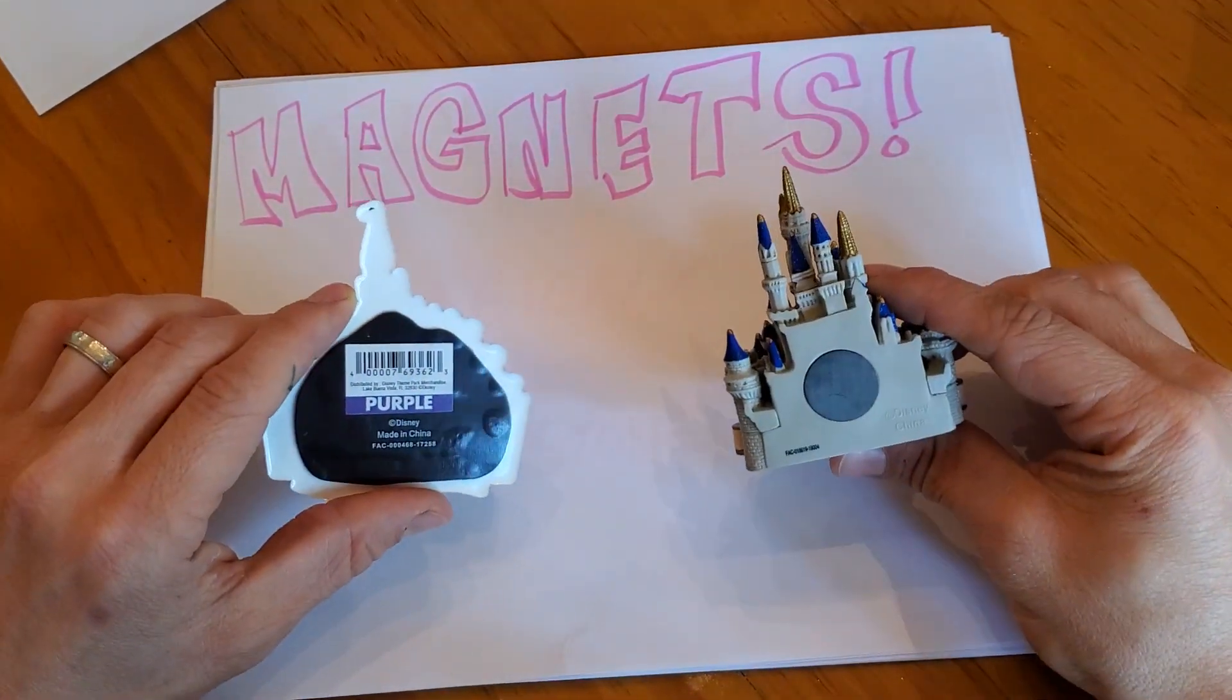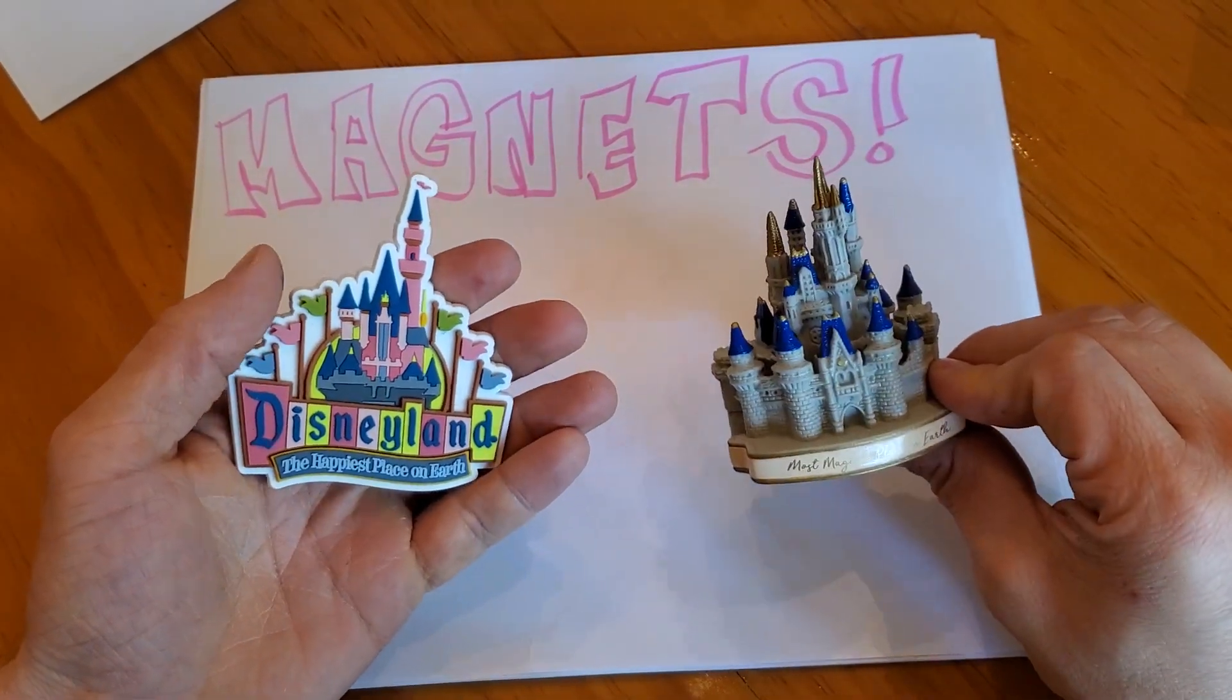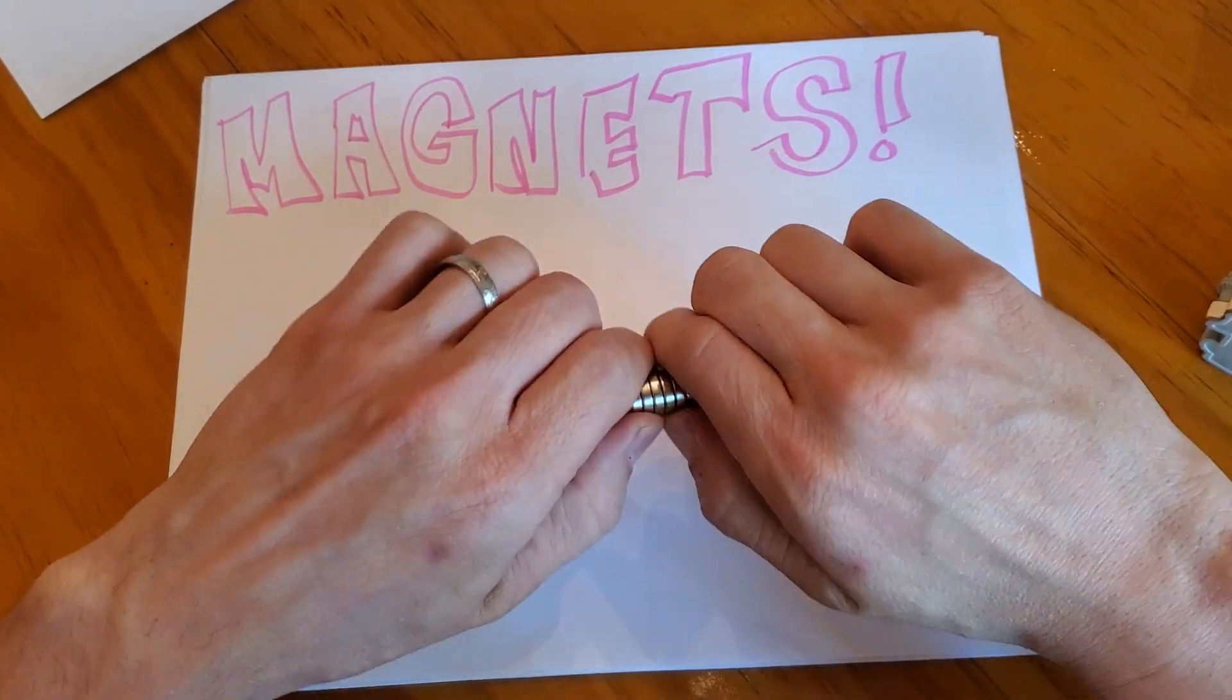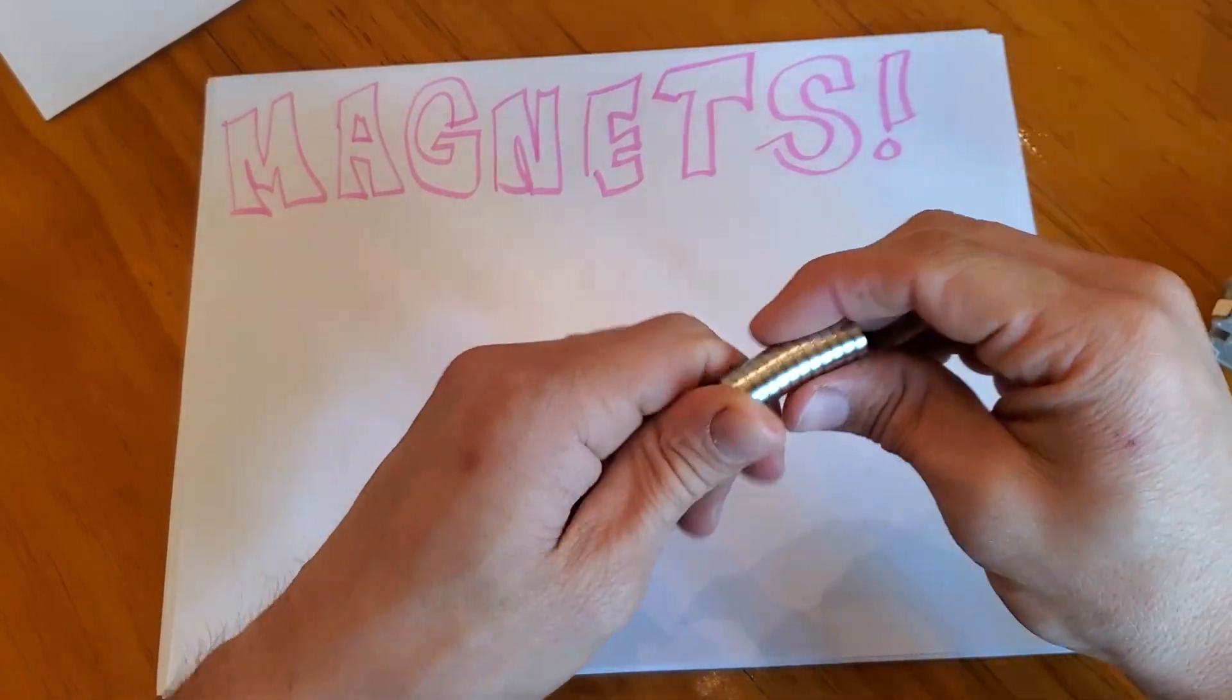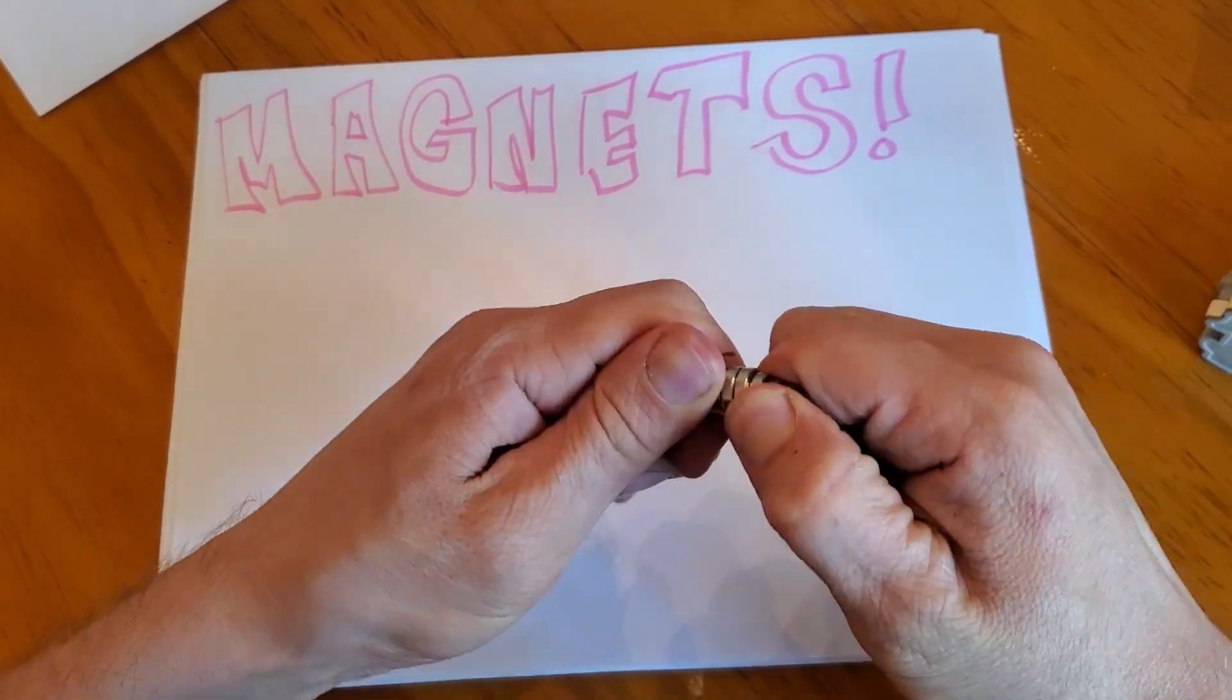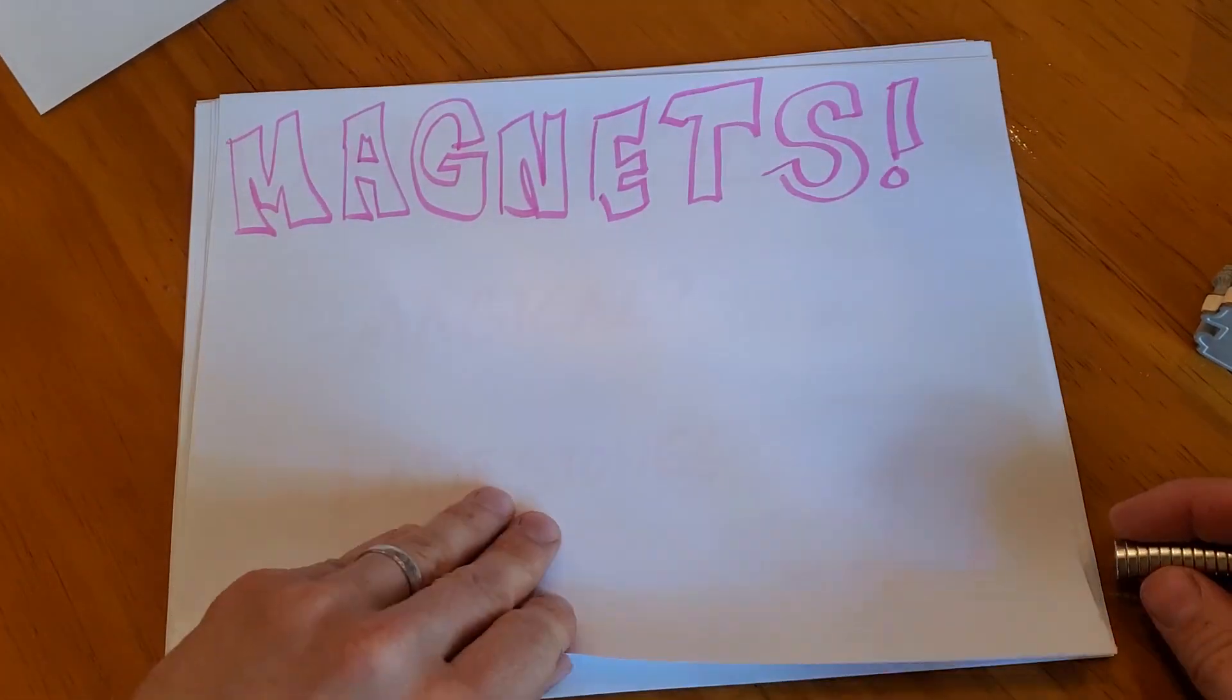First I have some quick examples of magnets. You can tell my wife is a huge Disney fan. This is your normal refrigerator magnet, but what we're going to look at today are some really, really powerful magnets. These are really, really strong. They're really hard to separate and they're really dangerous because they can actually pinch your skin. They will hurt you if you're not careful.